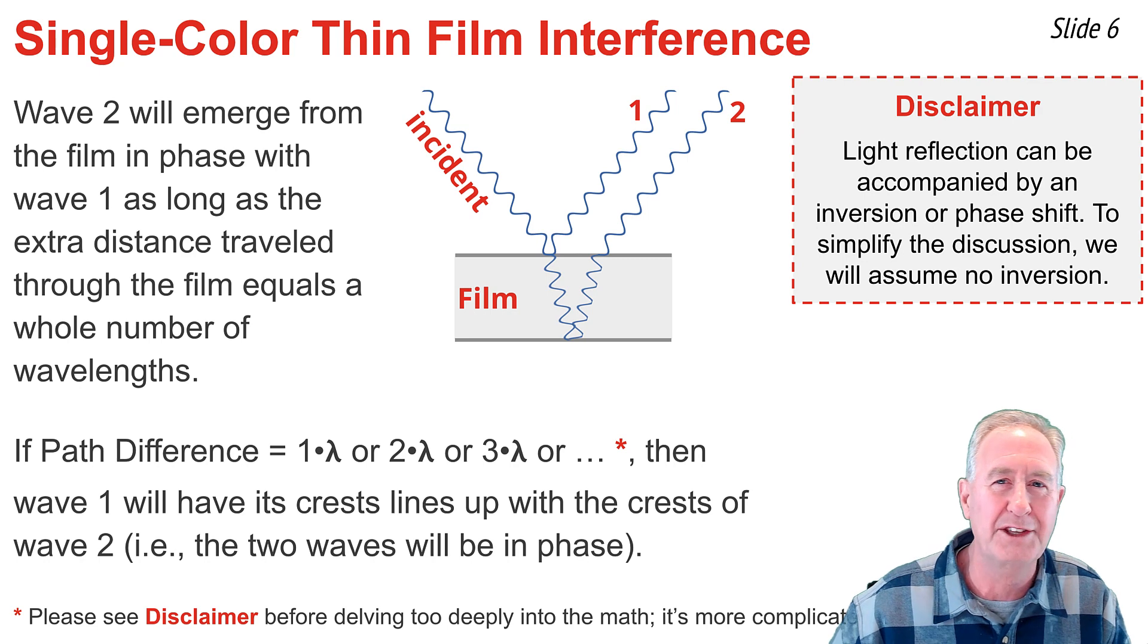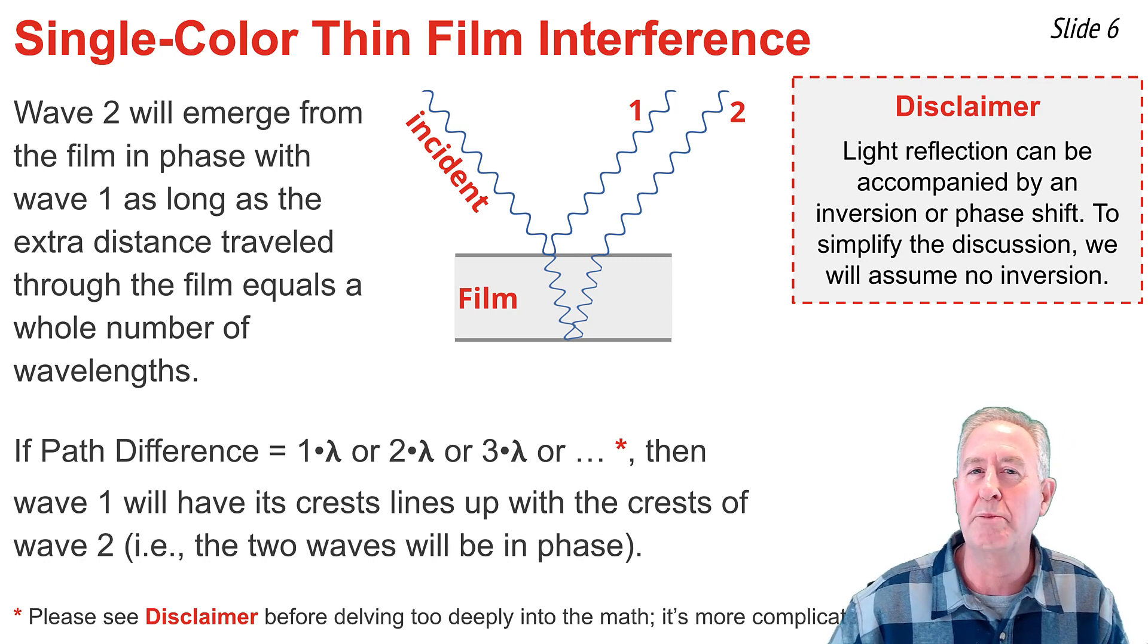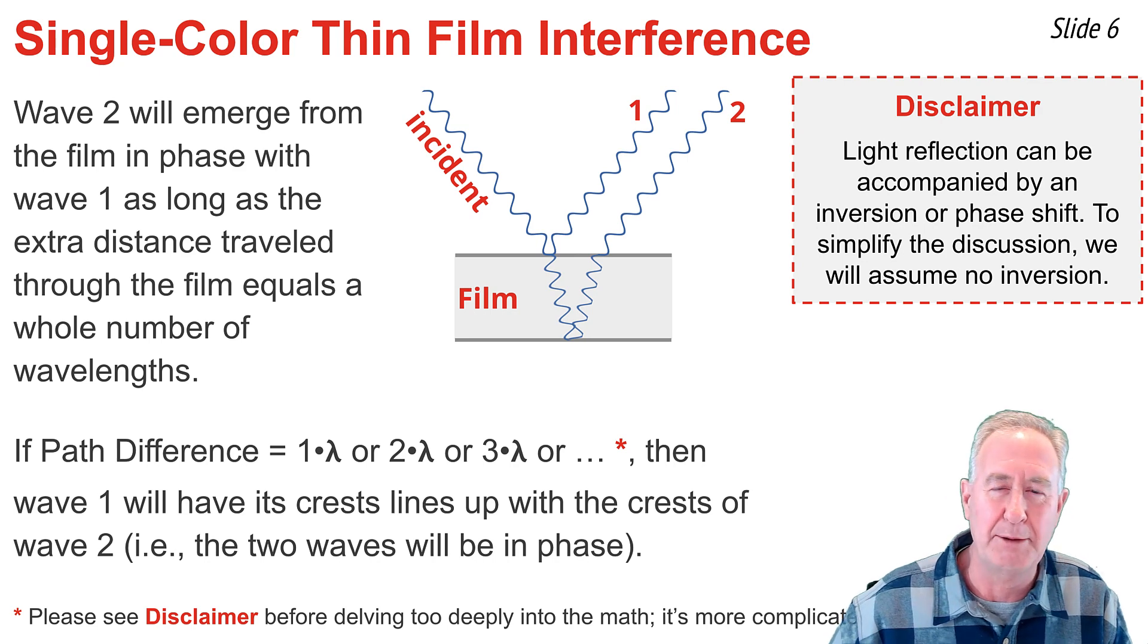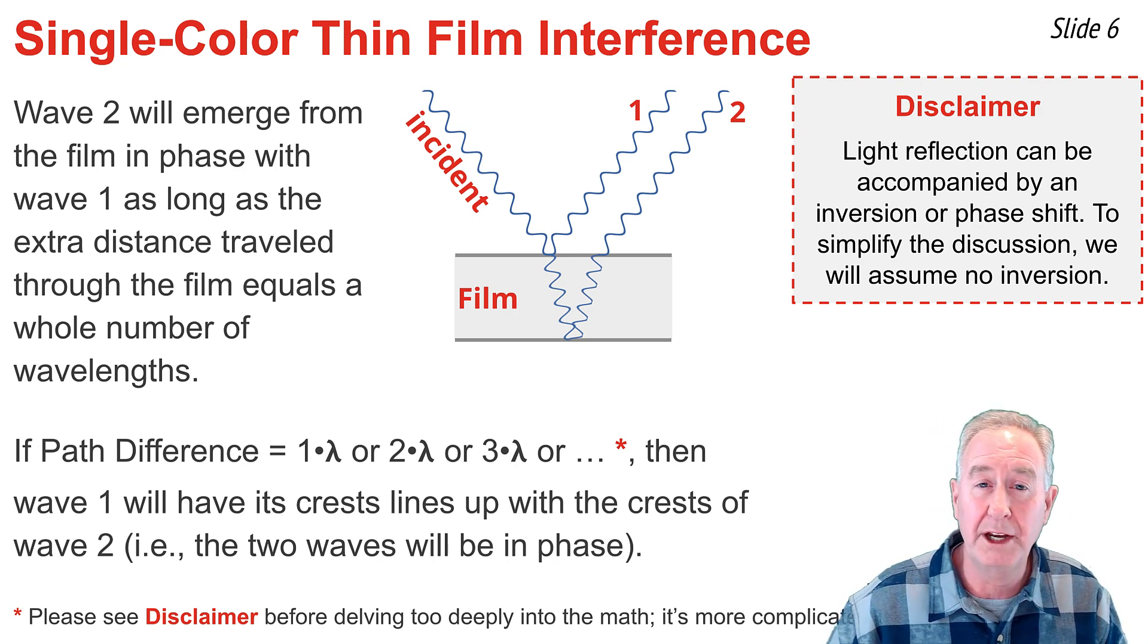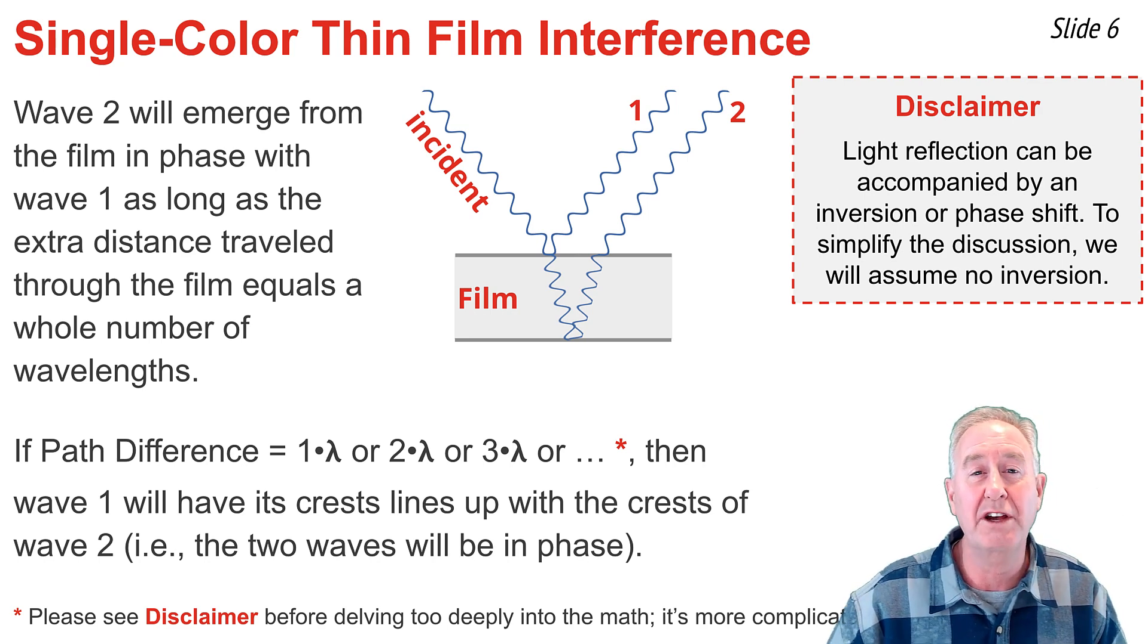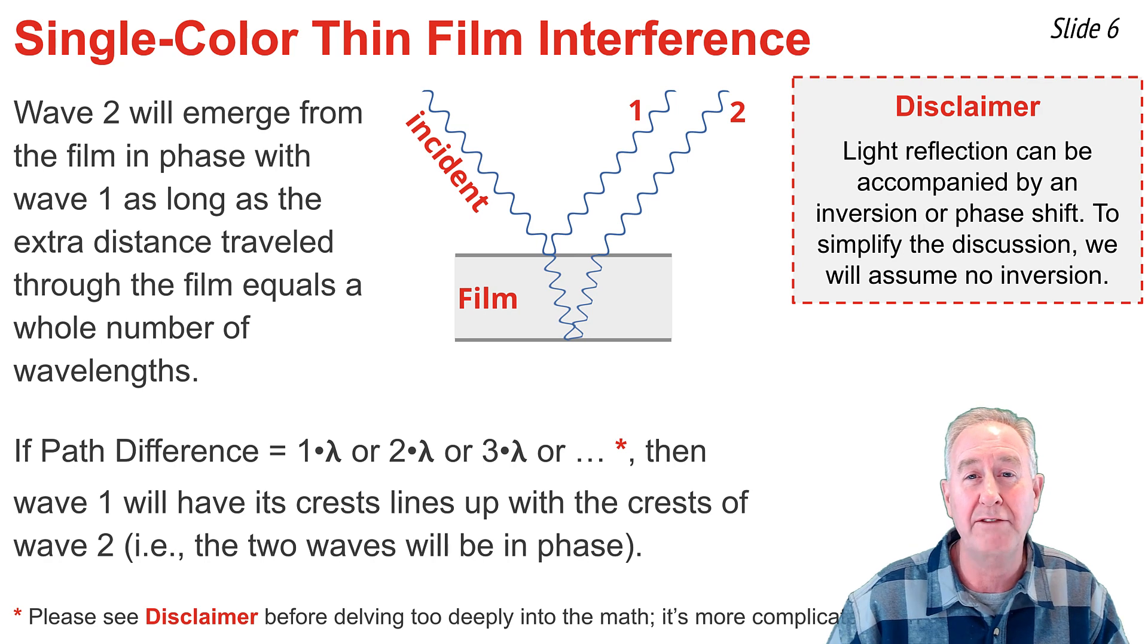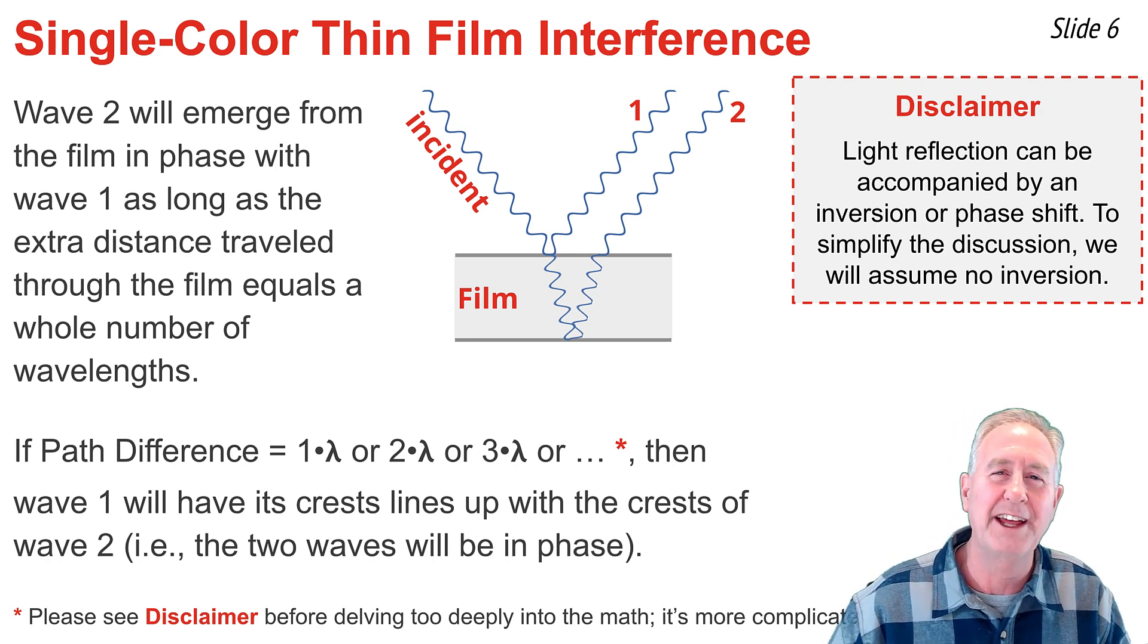And depending on the situation, I might have to turn my whole numbers here, of 1, 2, and 3, into half numbers. But I don't want to consider that nuance here, because I don't want to muddy the water. I'm only trying to show how a thickness of a film is associated with a wavelength and therefore a color that gets reinforced.